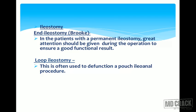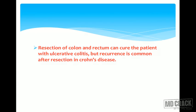Regarding ileostomy, there are two types: end ileostomy (Brook's ileostomy), where the patient has a permanent ileostomy, and loop ileostomy, which is often done as a defunctioning procedure for a pouch ileostomy. Resection of colon and rectum can cure the patient with ulcerative colitis, but recurrence is common after resection in Crohn's disease.